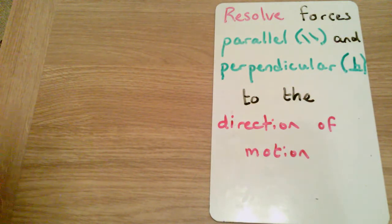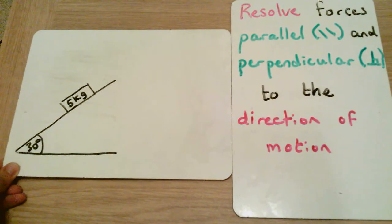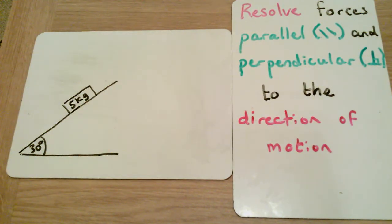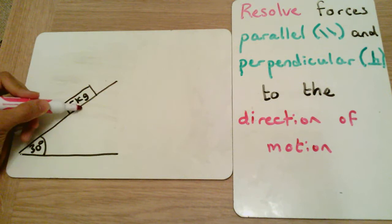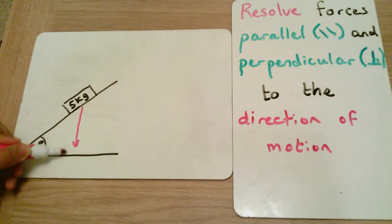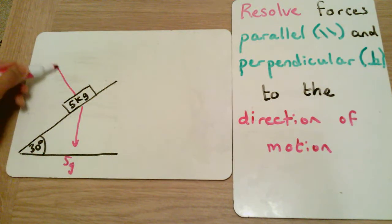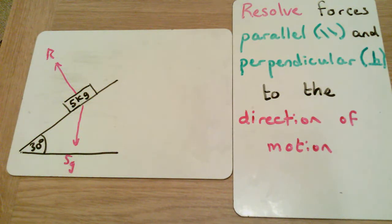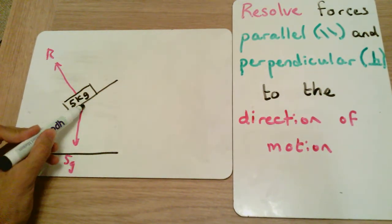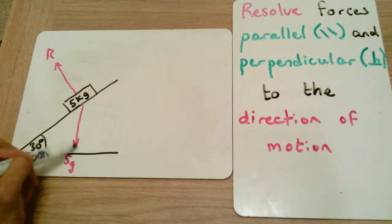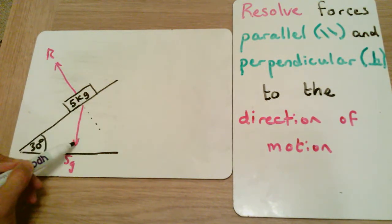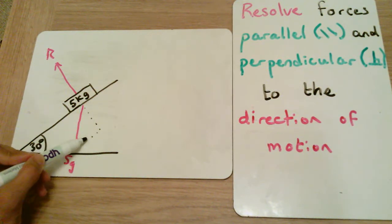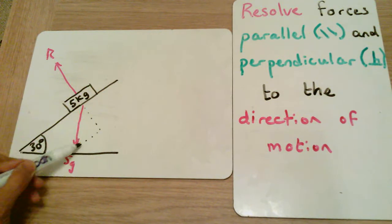Let's look at this scenario: we have a 5 kilogram block on a 30 degree incline. The first thing I do is put all the forces on — we have 5g acting downwards and the reaction force R perpendicular to the surface. Then I drop a perpendicular from the base of the weight vector, creating a line parallel to the direction of motion up the slope.